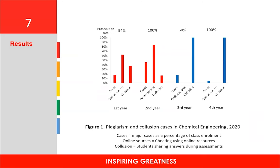This slide shows the summary of plagiarism and collusion cases within chemical engineering for 2020. We report the major cases as a percentage of class involvement, together with a percentage of students copying from an online source or colluding with one another. It is interesting to note that the majority of cases at the first- and second-year level were due to students copying from online sources, with many claiming they did not even understand why this was wrong. Students at the third- and fourth-year level were almost exclusively involved in collusion and sharing of answers, albeit at lower numbers compared to total class involvement.